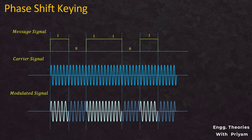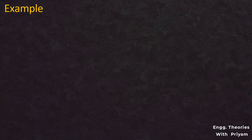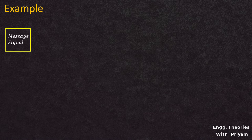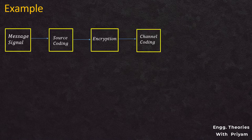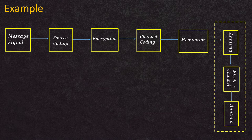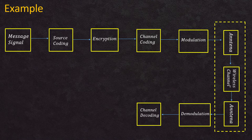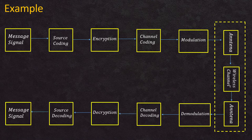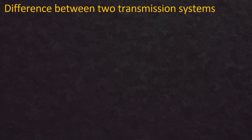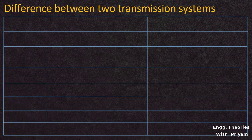The main difference between baseband and passband transmission is that passband transmission must include modulation in the transmitter and demodulation in the receiver. Generally, all wireless and satellite communications transfer data using passband transmission. In wireless transmission, after source coding and channel encoding, modulation is performed. The signal is transmitted from the transmitter antenna to the receiver antenna via a wireless channel, then demodulated, channel decoded, and source decoded at the receiver.